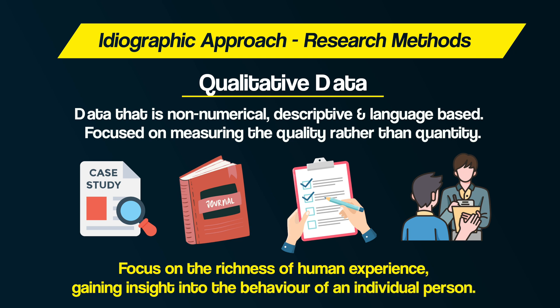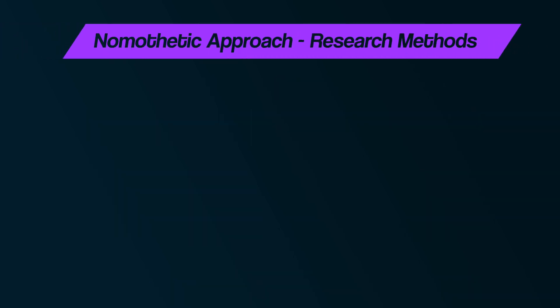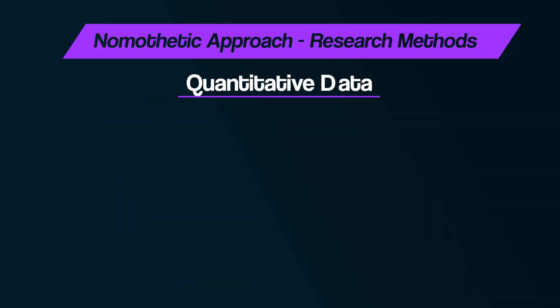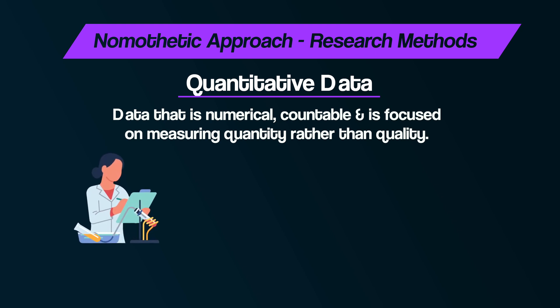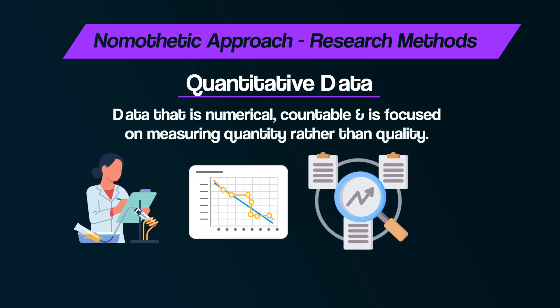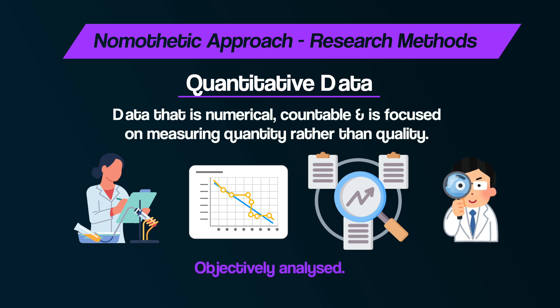In contrast, a nomothetic approach gathers quantitative data — data that is numerical, countable, and focused on measuring quantity rather than quality. This type of data is gathered through research methods such as experiments, correlations, meta-analysis, and observations that can be objectively analysed, and involves studying a large sample of participants.